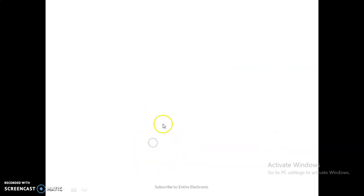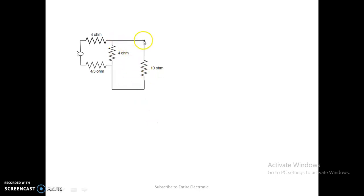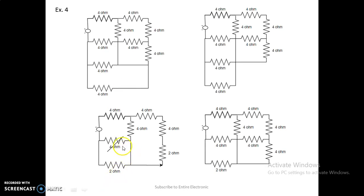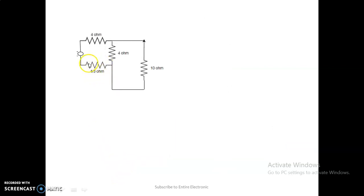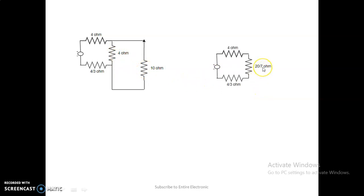Adding the three series resistances: 4 + 4 + 2 = 10 ohm. This 10-ohm resistance is connected into the circuit. Now, since no resistance is connected between the next two branches, those two resistances are in parallel: 1/2 + 1/4 = 4/3 ohm. We also have a 4-ohm resistance in parallel with the 10-ohm, giving 1/4 + 1/10 = 20/7 ohm.